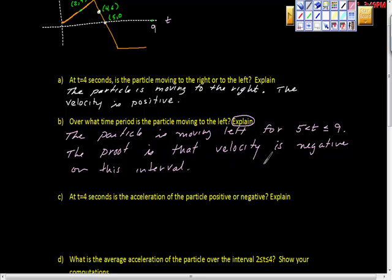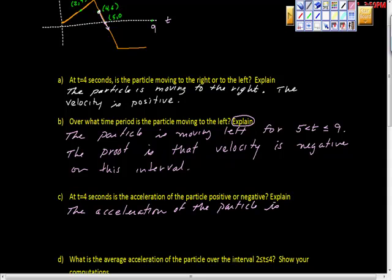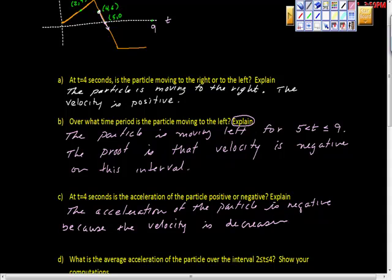The acceleration of the particle is negative because the velocity is decreasing — it's moving down on the graph. So the acceleration of the particle is negative because the velocity is decreasing.